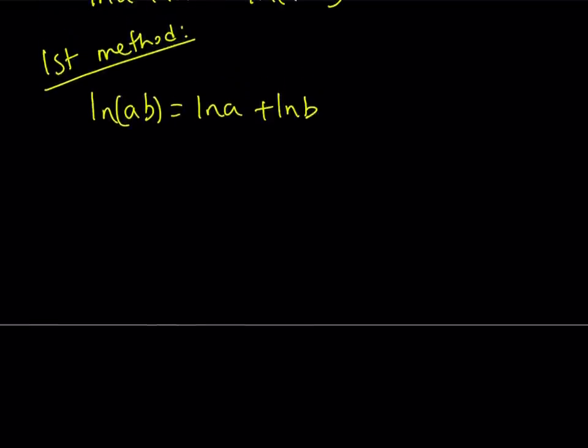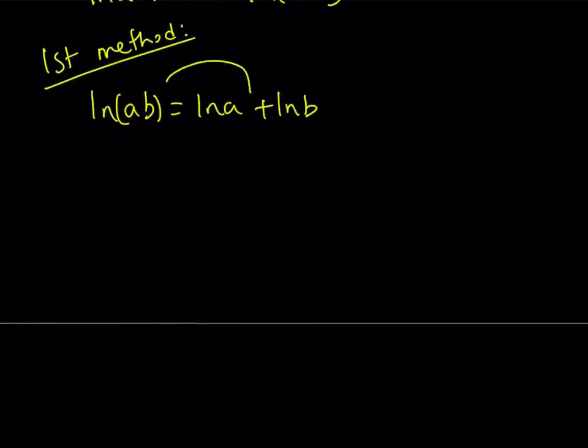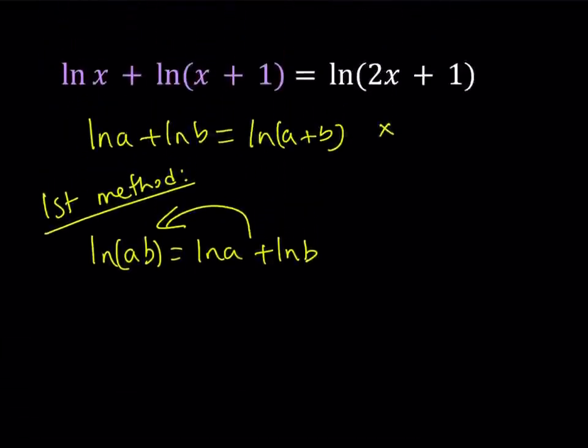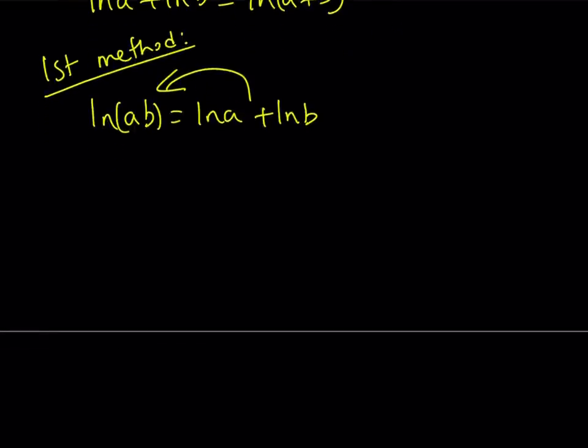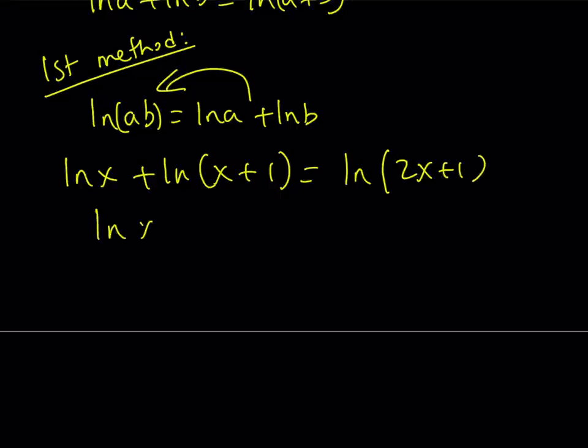So we're going to use this backwards. We have the sum of two ln's, which we can write as the ln of a product. So ln x plus ln(x+1) equals ln(2x+1). Now the left-hand side can be written as ln(x times (x+1)). And then the right-hand side is just going to stay as is.